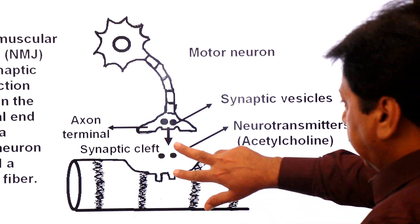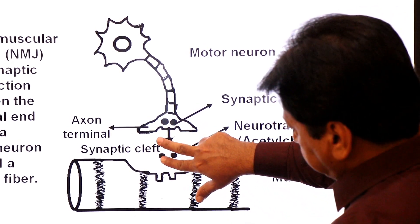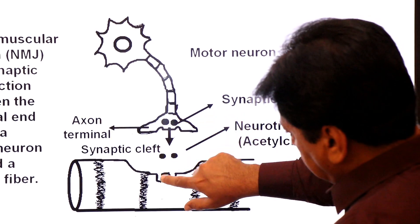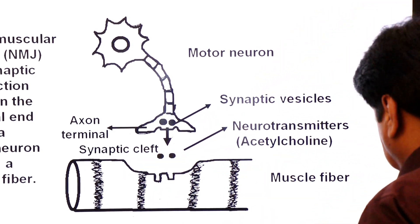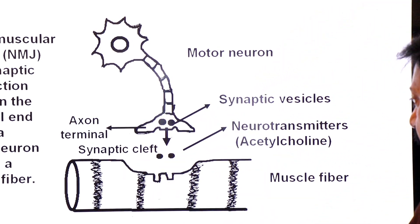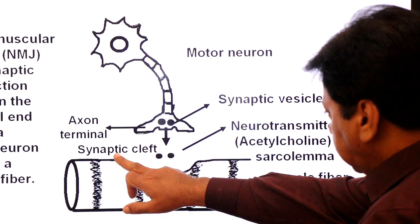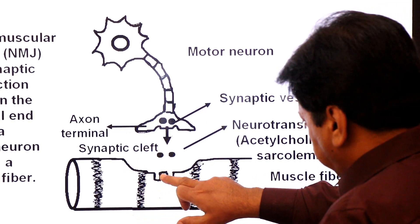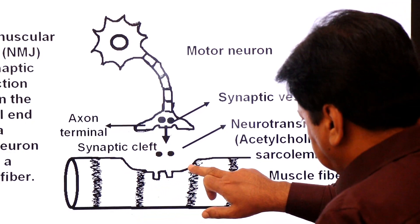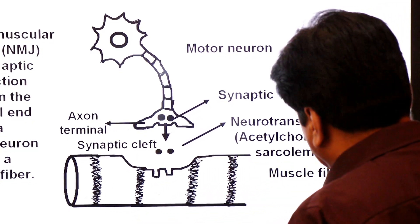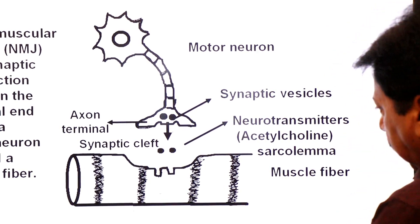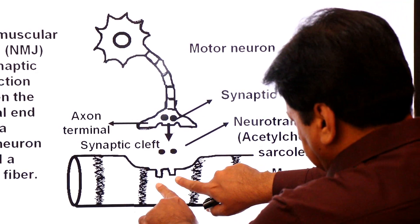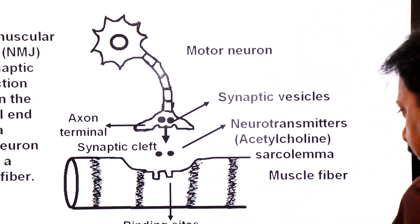The gap between the motor neuron and the muscle membrane is called the synaptic gap, also called the synaptic cleft. The cell membrane of the muscle cell is called the sarcolemma, and the sarcolemma has binding sites present.